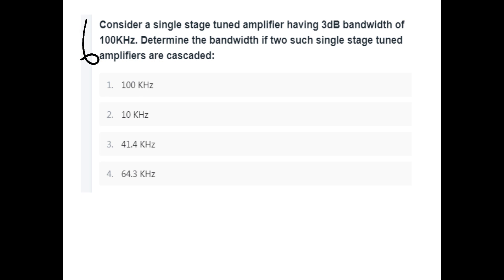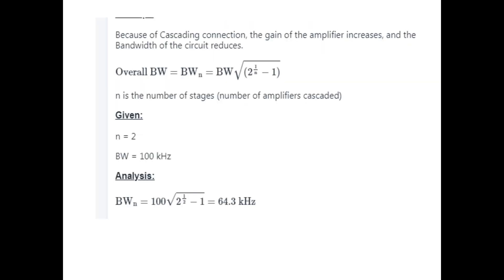Consider a single-stage tuned amplifier having 3dB bandwidth of 100 kHz. Determine the bandwidth if two such single-stage tuned amplifiers are cascaded. The formula for cascaded bandwidth is BW equal to BW_single multiplied by root of (2 raise to 1/n minus 1).